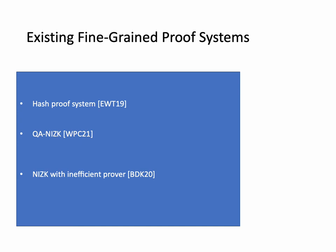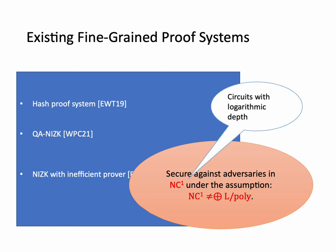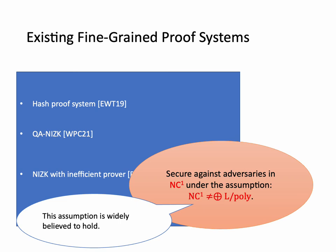By now there have been several fine-grained proof systems proposed, such as the hash proof system proposed by Gasser and others, a QNIZK proposed by Wang and others, and a NIZK with inefficient prover proposed by Ball and others. All existing proof systems in the fine-grained setting are secure against adversaries in NC1, under the assumption that NC1 is not equal to Parity-L/poly. Here, NC1 is the class of circuits with logarithmic depth, and Parity-L/poly is the class of languages with polynomial-sized branching programs. This assumption is widely believed to hold.